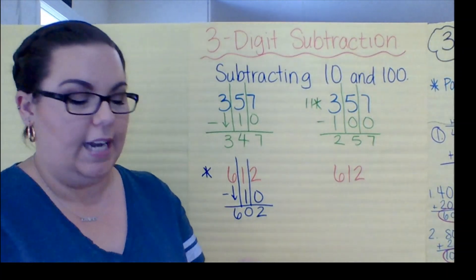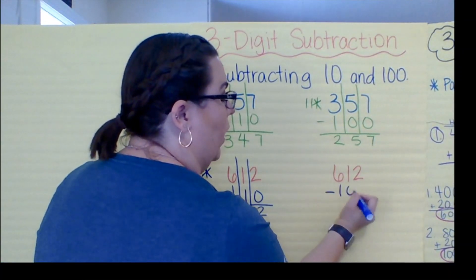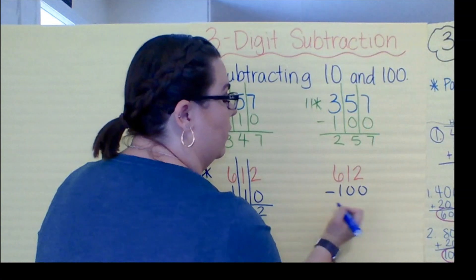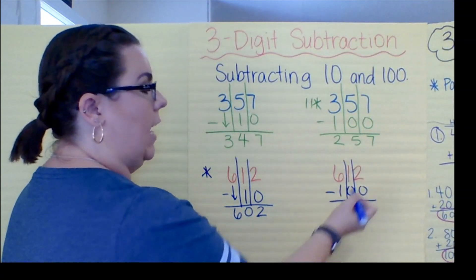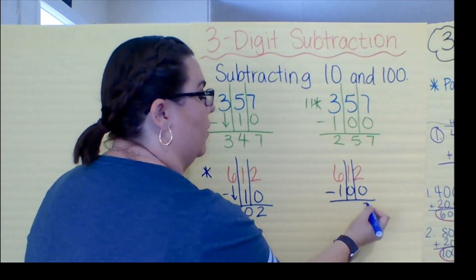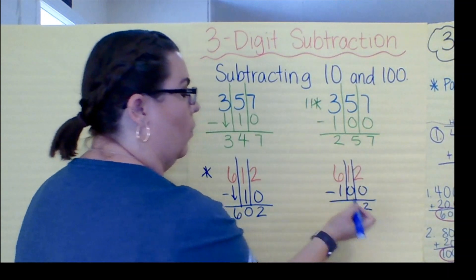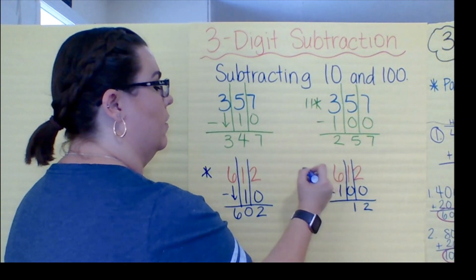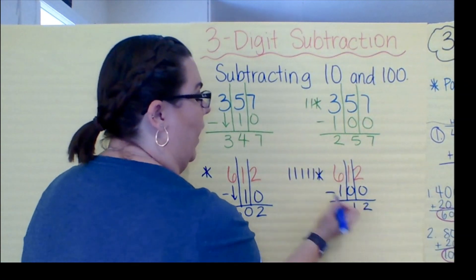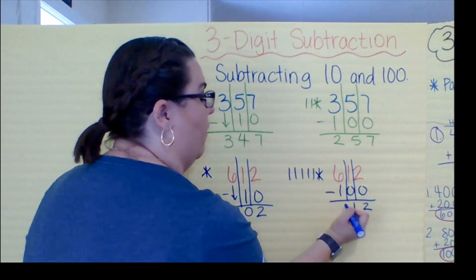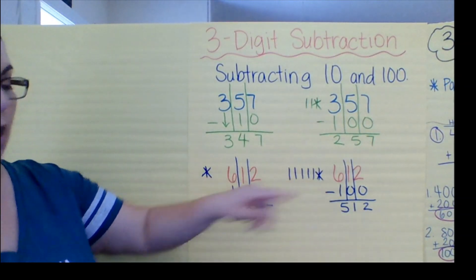And then minus 100: going straight down — two minus zero is two, one minus zero is one. Then six take away one: you have five left. In this one, all you're changing is the hundreds.